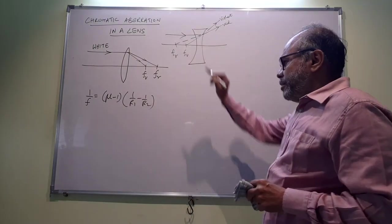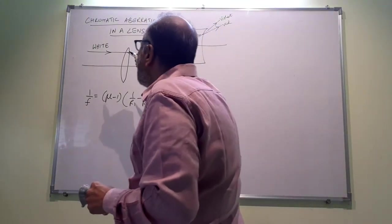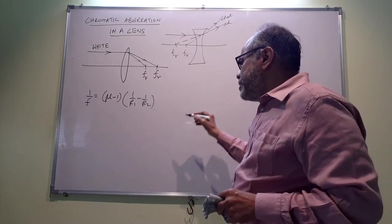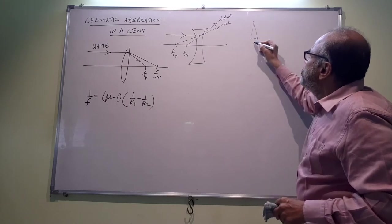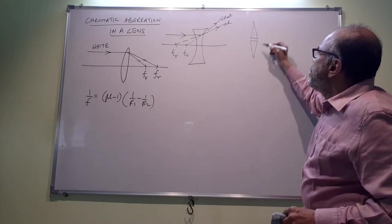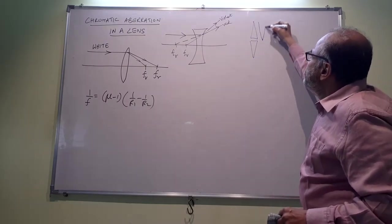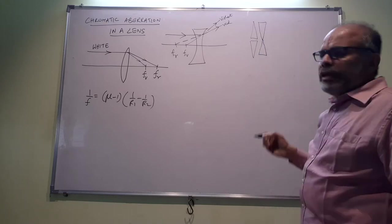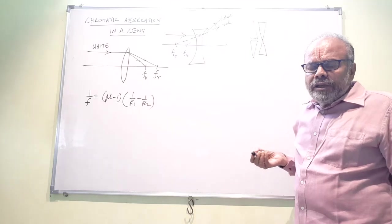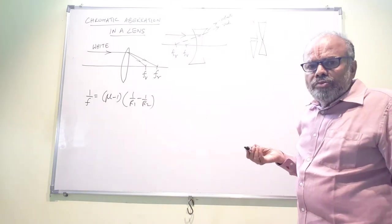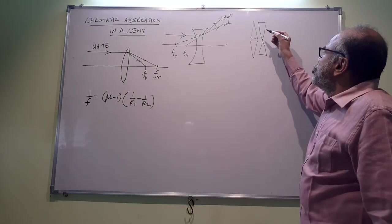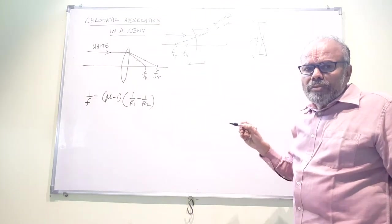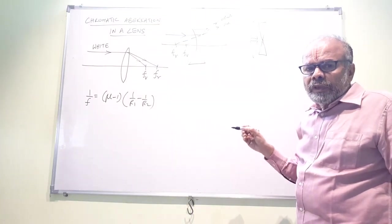In fact, the convex lens can be seen as a prism, two prisms this way, and a concave lens can be seen as two prisms this way. We learnt about achromatic combination of prisms. So in the same way, we are now going to study the chromatic combination of lenses.